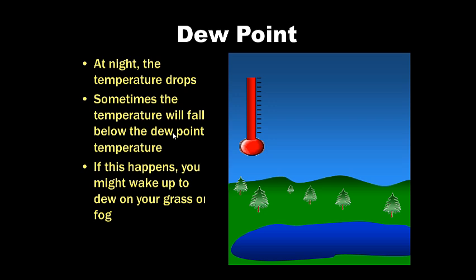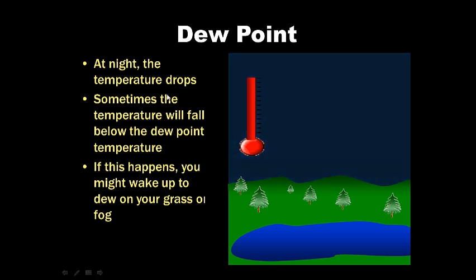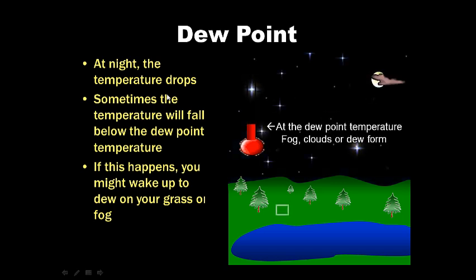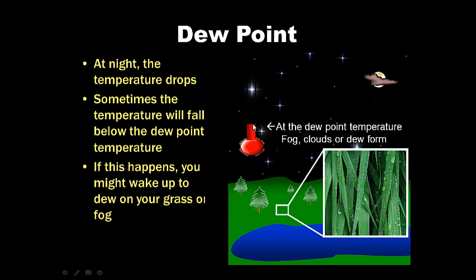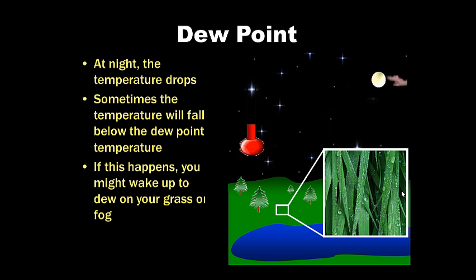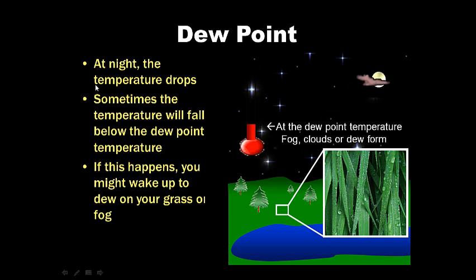Let's take a look at the dew point. You may have noticed dew on the grass early in the morning. How does this happen? Well, at night, the temperature drops. It gets cold. And sometimes the temperature will fall down below a temperature known as the dew point. At the dew point temperature, fog, clouds, or dew form. We get dew on grass so long as the temperature cools down below the dew point temperature. If this happens, you wake up with dew on your grass or fog in the morning.